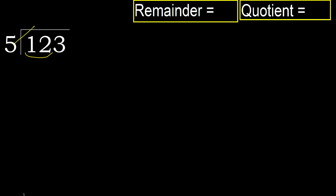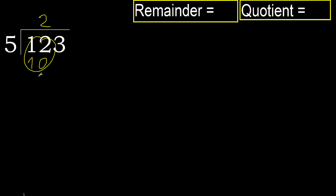5 multiplied by which number is nearest to 12 but not greater? 5 multiplied by 3 is 15 — 15 is greater. Multiply by 2: 10, which is not greater. Subtract: 12 minus 10 is 2.